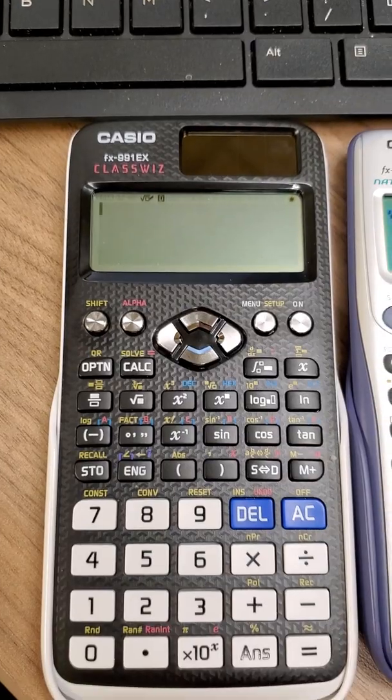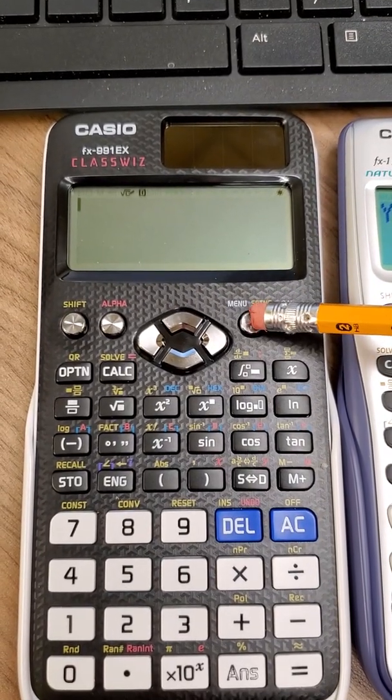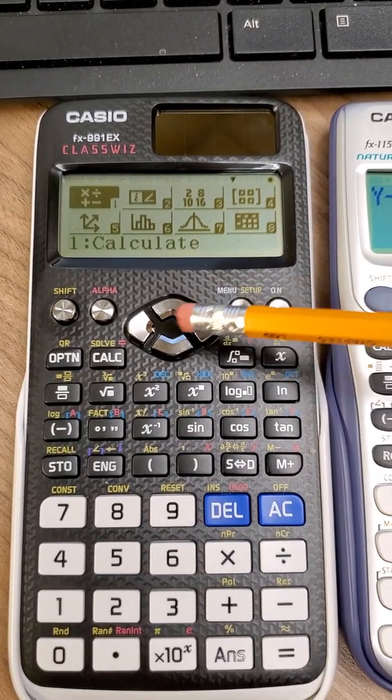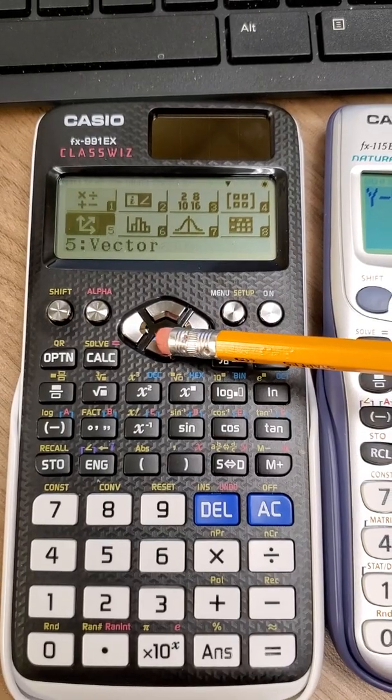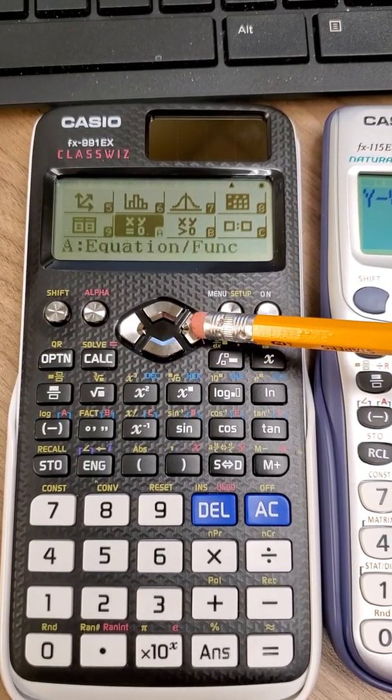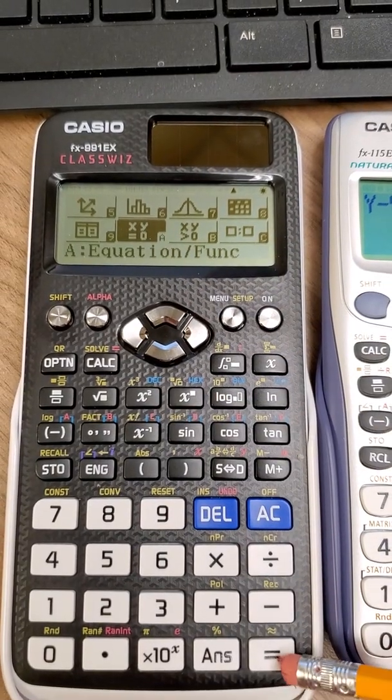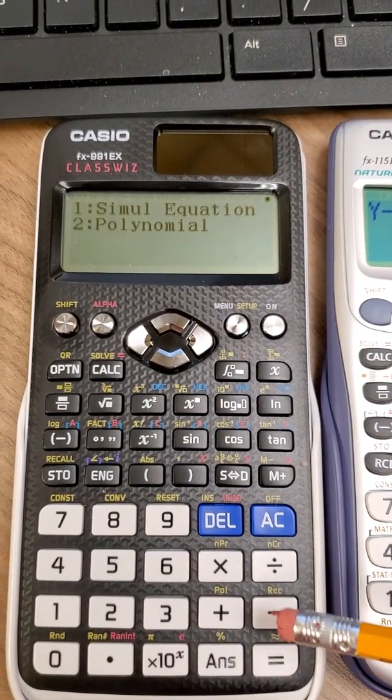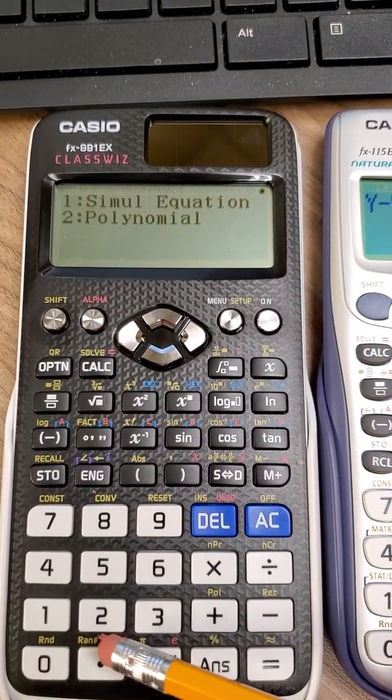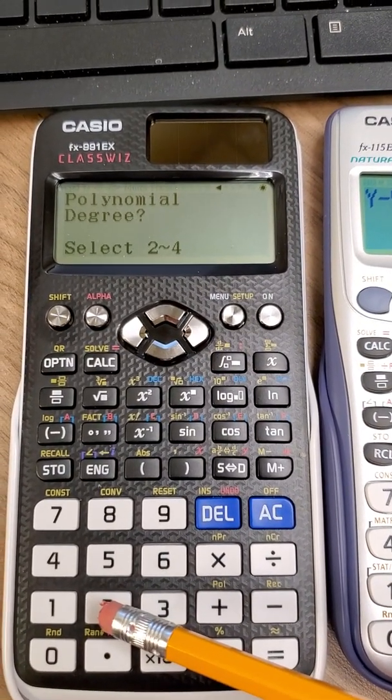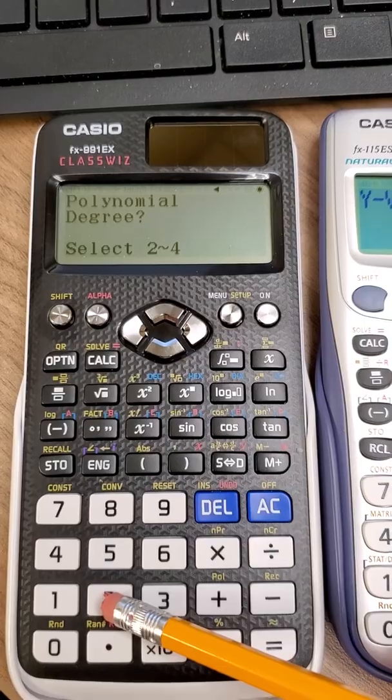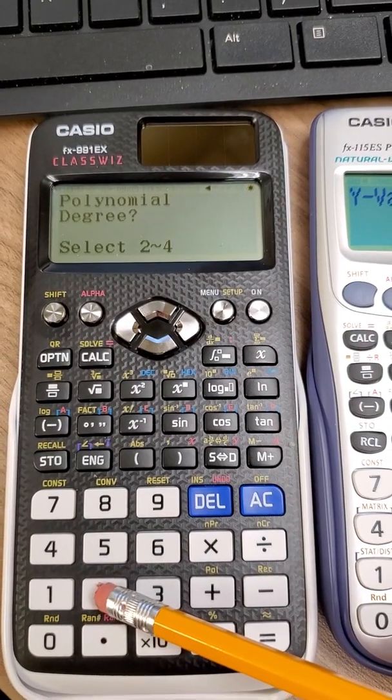Now let's look at how to do this with the ClassWiz. We're going to hit the menu button. We're going to scroll down and select the equation function option. So we're going to hit equals to select that. We're going to select polynomial which is option two. And our degree is two. Quadratic is a degree of two.